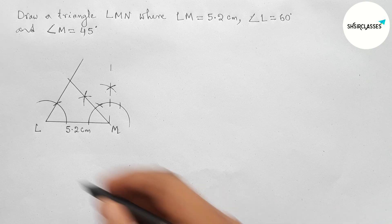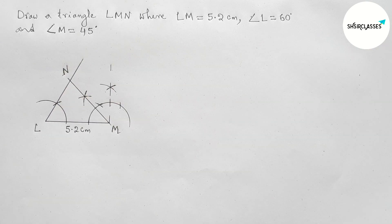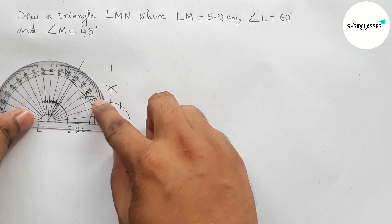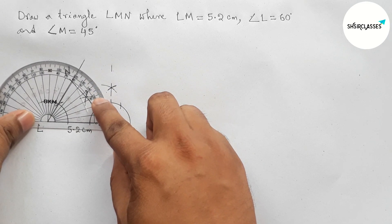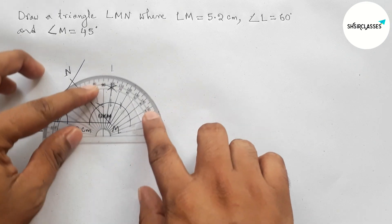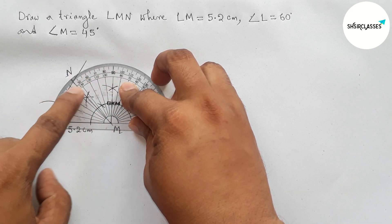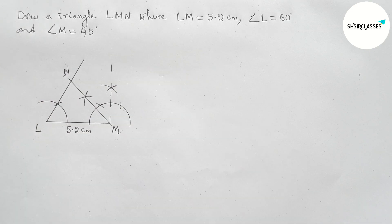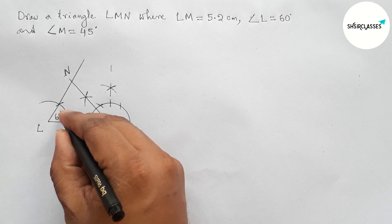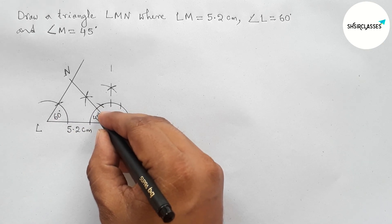Both lines meet at a point, forming triangle LMN. Measuring with the protractor: this is perfectly a 60 degree angle at L, and this is perfectly a 45 degree angle at M. So we have angle L equal to 60 degrees and angle M equal to 45 degrees.